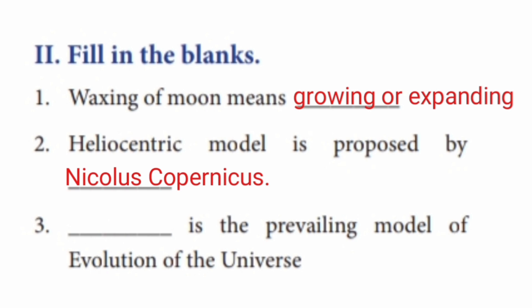Question 8: Which is the prevailing model of evolution of the Universe? The answer is the Big Bang Theory. The Big Bang Theory is the prevailing model of evolution of the Universe.